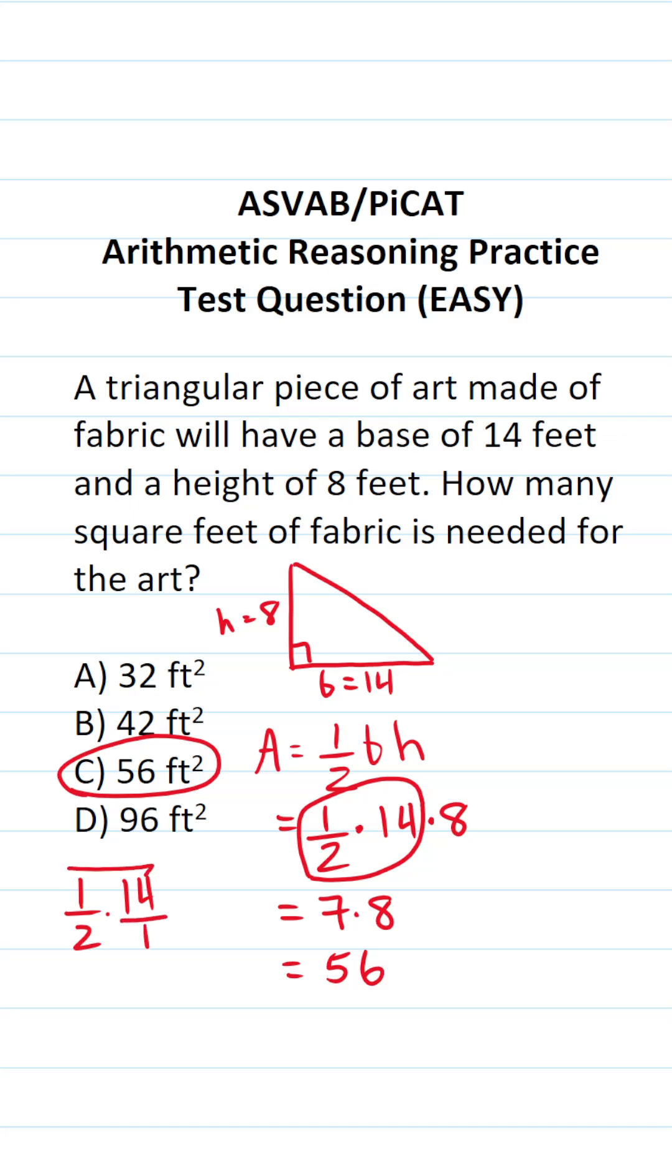When you multiply two fractions, you multiply straight across. So this becomes 1 times 14 over 2 times 1. 1 times 14 is 14. 2 times 1 is 2. 14 divided by 2 is 7. So that is how I got that 7 mentally.